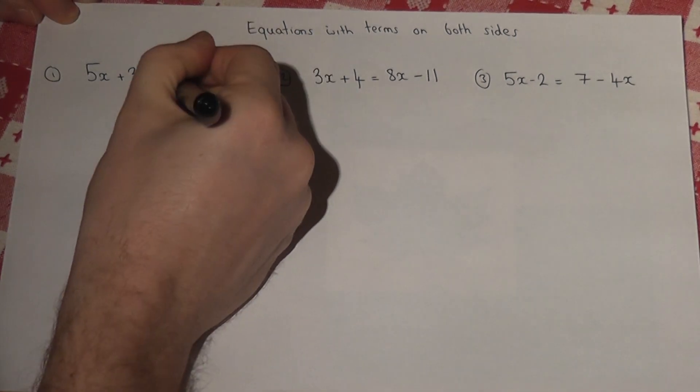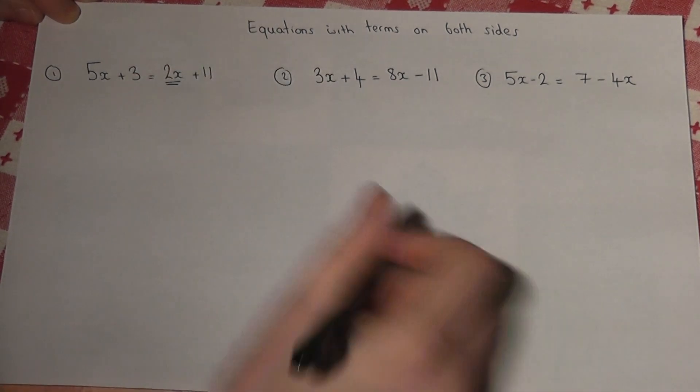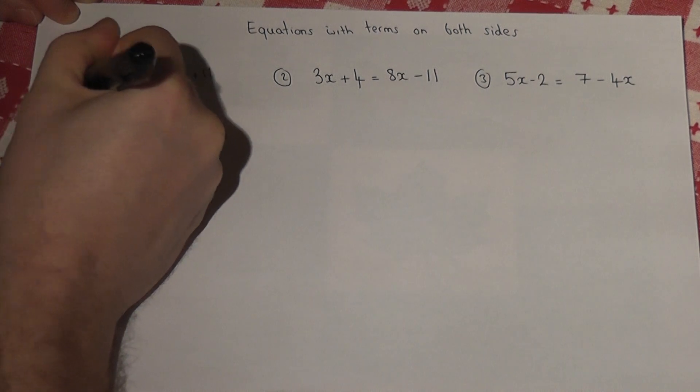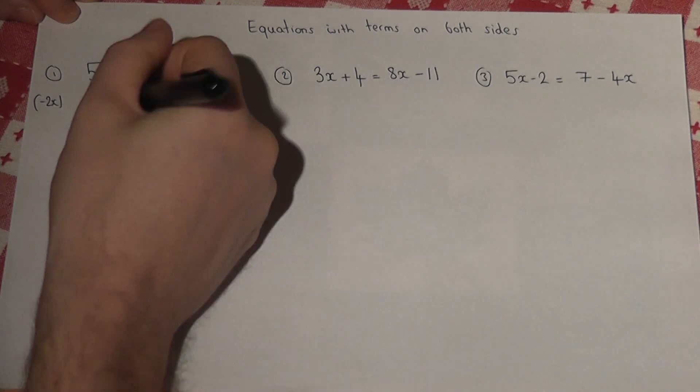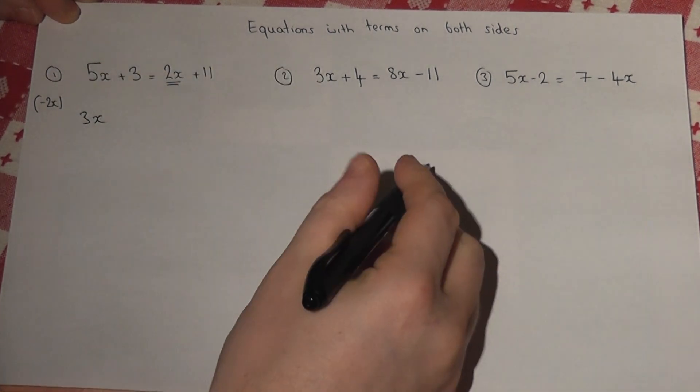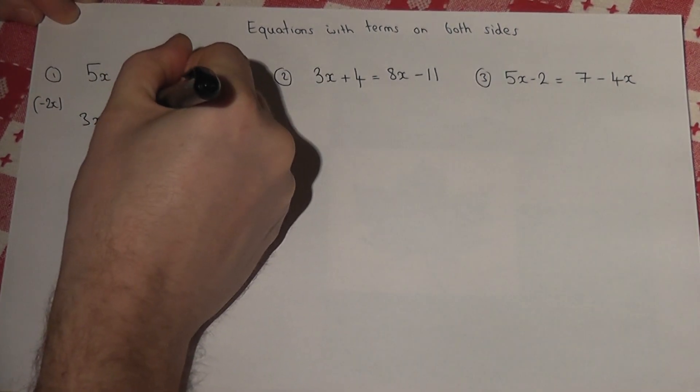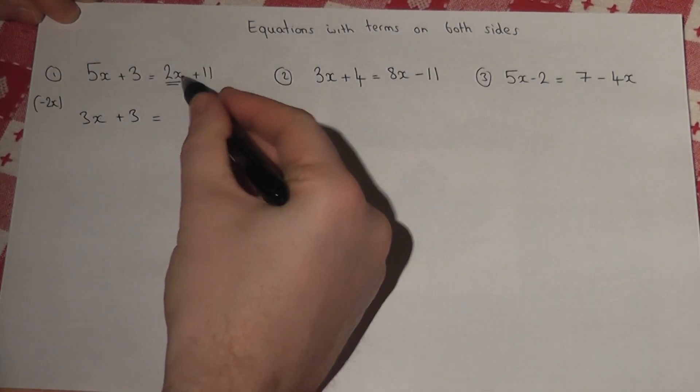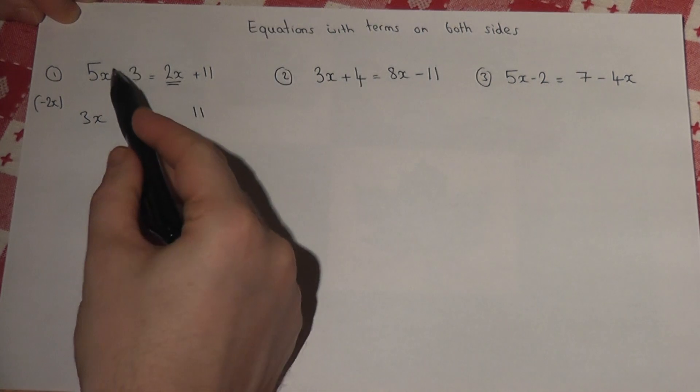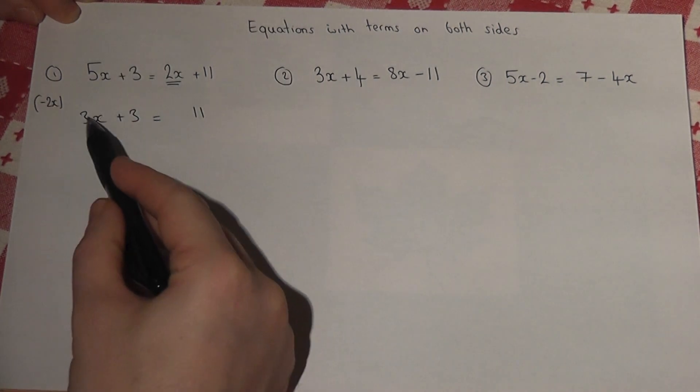So there's a 2x on the right hand side here. So if I take away 2x from both sides, that will cancel out. So I'm left with 3x plus 3 equals 11. So that 2x is cancelled out and 5x take away 2x is 3x.